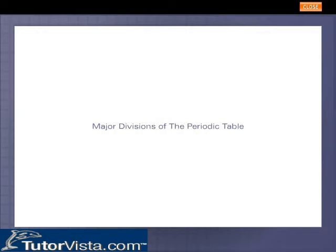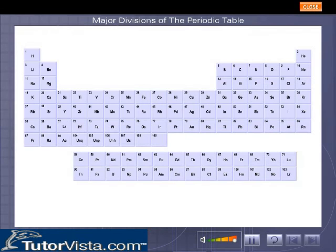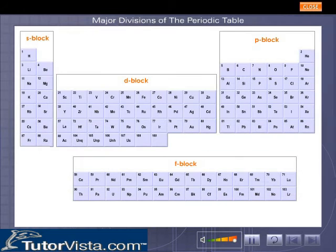Major Divisions of the Periodic Table. The division of elements into blocks is based upon the electronic configuration. You can see a simplified representation of the periodic table showing the four blocks.